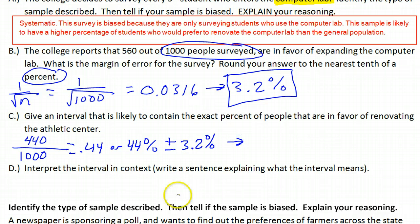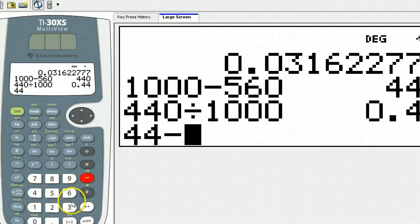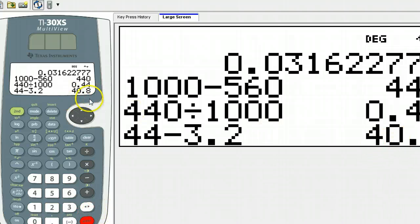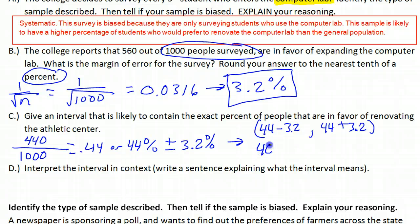If I do my 44 minus 3.2, and then if I do my 44 plus 3.2, that's going to give me my interval. That's going to be 40.8 and 44 plus 3 is 47.2%.